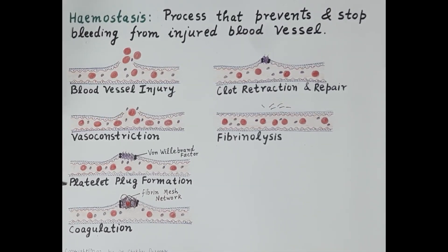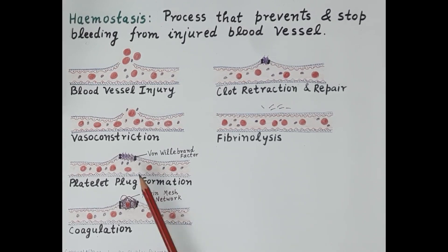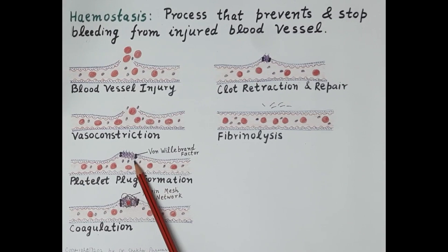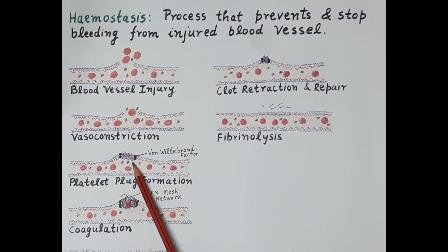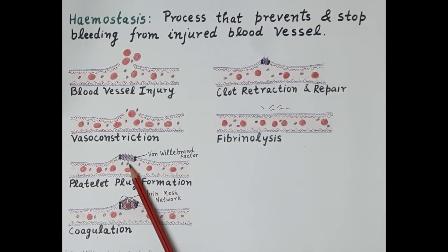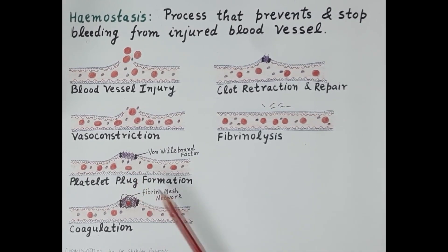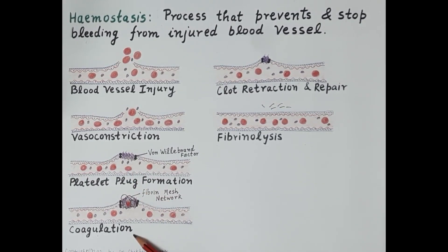Vasoconstriction is followed by the formation of a platelet plug. This step is also called primary hemostasis. As shown in the diagram, platelets stick to each other forming a platelet plug, and this platelet plug temporarily seals the injured site of the blood vessel wall.